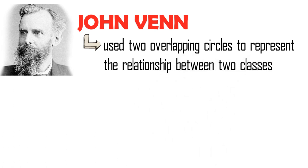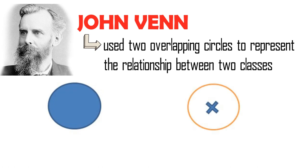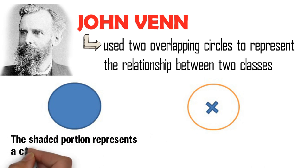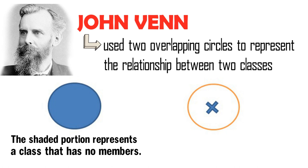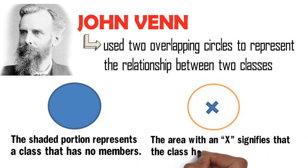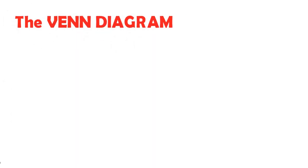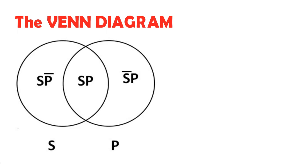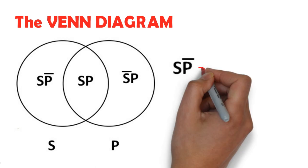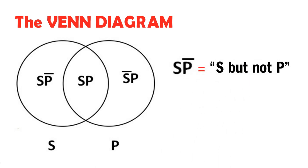Consider these diagrams. The shaded portion represents a class that has no members, while the area with an X signifies that the class has at least one member. Generally, this is what a Venn Diagram looks like, where this is read as 'S but not P,' and this represents the class of things that are part of S but are not part of P.